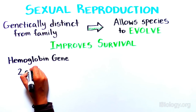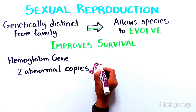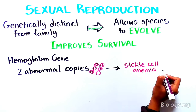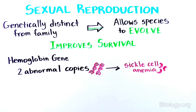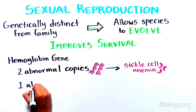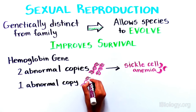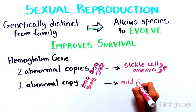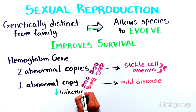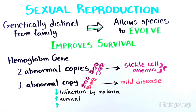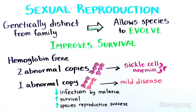For example, humans who carry two abnormal copies of the hemoglobin gene develop sickle cell anemia, a devastating disease that results in abnormally low levels of oxygen in the blood. Individuals who have only one copy of the abnormal gene have a much less severe form of the disease. Interestingly, heterozygous individuals are much less prone to infection by malaria, making them more likely to survive and have higher reproductive success in malaria endemic areas. This example shows how sexual reproduction can produce offspring who are genetically distinct from their parents and are better suited to survive under certain environmental conditions.